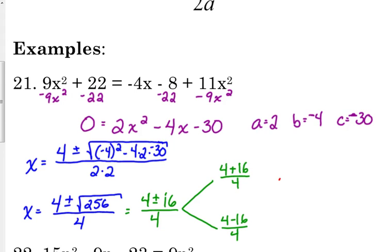We have 4 plus 16 over 4 and 4 minus 16 over 4. So that's going to give us, 4 plus 16 is 20, 20 divided by 4 is 5. And 4 minus 16 is negative 12. Negative 12 divided by 4 is negative 3.